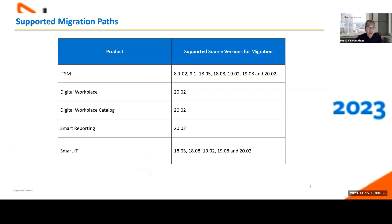Regarding supported migration packs — the source versions listed on the right are all supported for migration. For customers with a source version of 20.02, we have a new utility just released called the Workflow Migration Utility or Customization Migration Utility. Customers on 20.02 can leverage that utility along with a special migration pack on the HTM. For customers not on 20.02, you still have Developer Studio and Deployment Console, which you can use in combination to migrate your customizations — we'll cover that shortly.